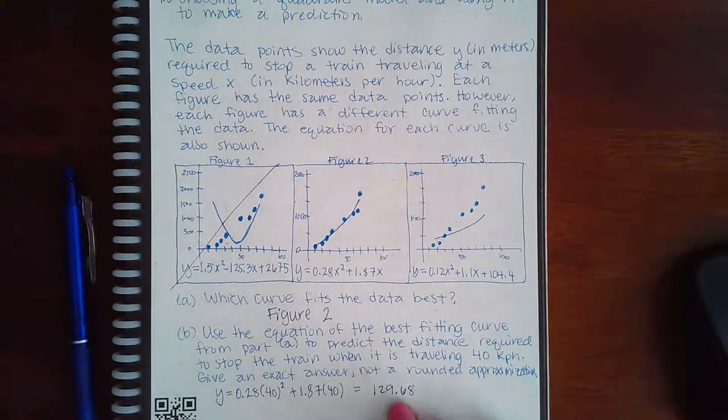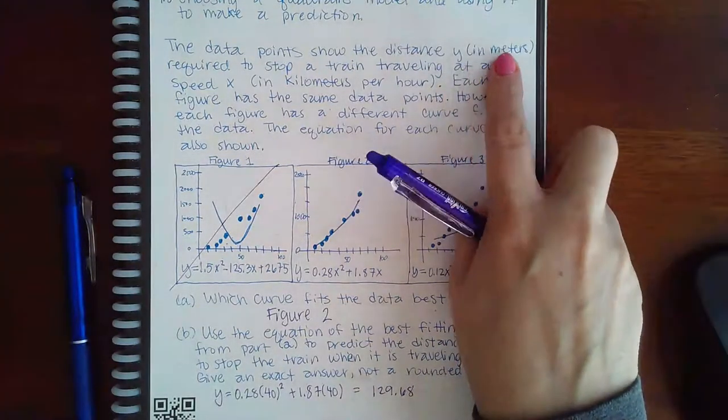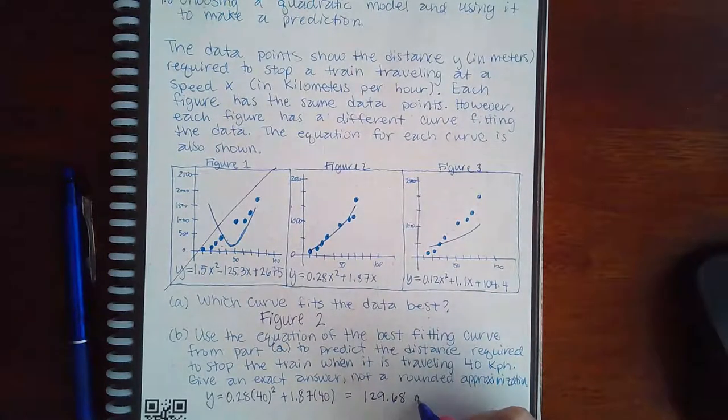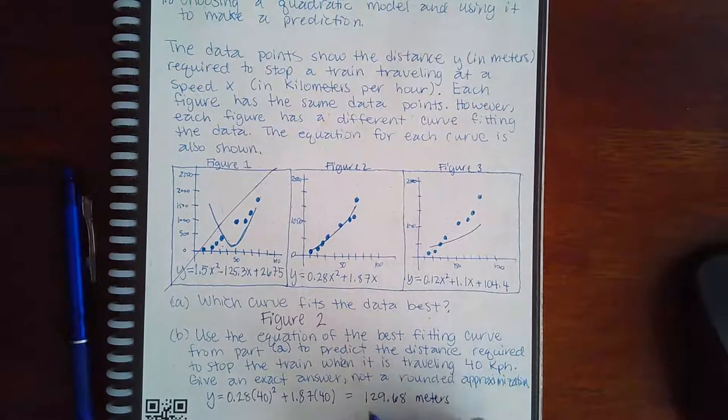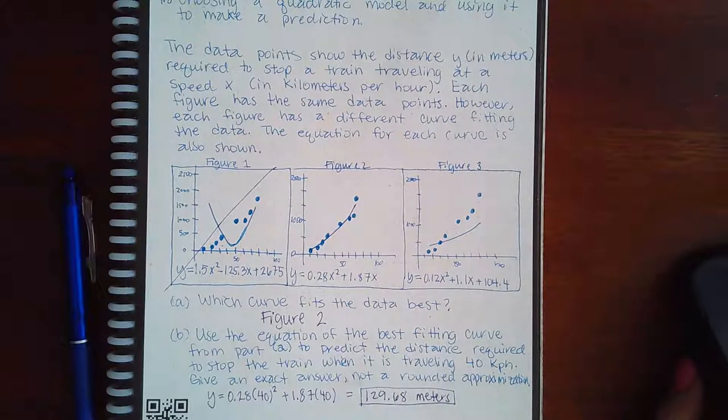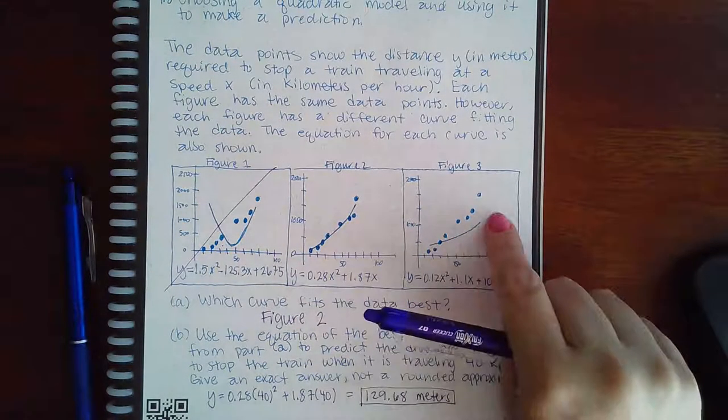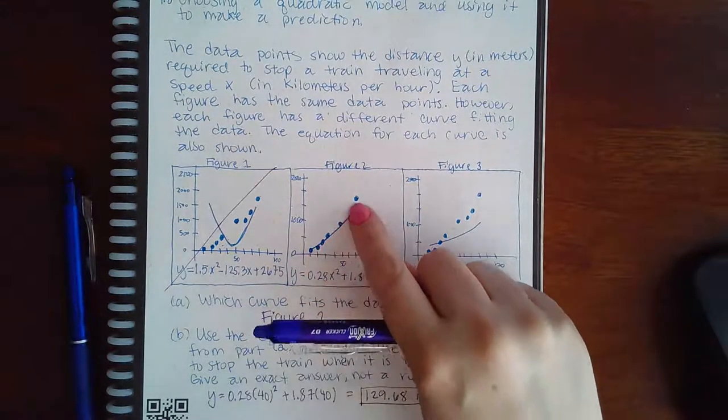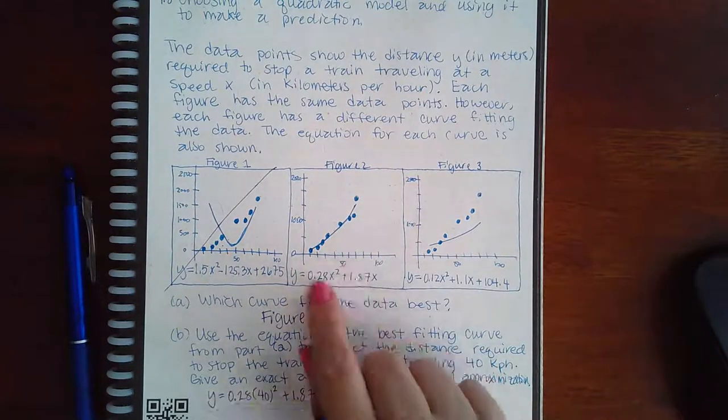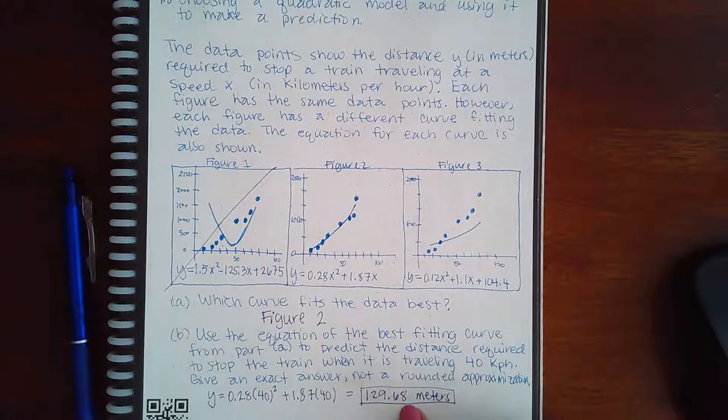Remember the y value is in meters, so this is 129.68 meters, and that is all you need to do for this problem. Find the image where the curve looks like it's better aligned with all of your data points, and then use that equation to plug in the value they give you to find out the response.